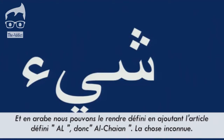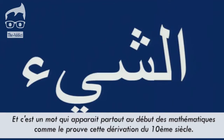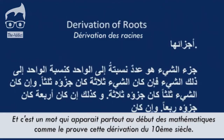In Arabic, we can make this definite by adding the definite article 'al.' So this is al-sheen — the unknown thing. And this is a word that appears throughout early mathematics, such as this 10th century derivation of proofs.